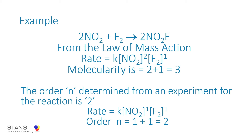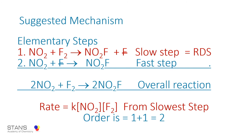The rate law in reality is rate equals k times concentration of NO2 raised to 1, F2 raised to 1, so the order is 1 plus 1 equals 2. Normally when you write the rate law, if the exponent is 1 we don't write it, but I'm writing it here for this introductory video. Now we will look at a suggested mechanism. There are two elementary steps in this reaction. The first elementary step is NO2 plus F2 gives NO2F plus F, which is the slowest step — the rate determining step (RDS).